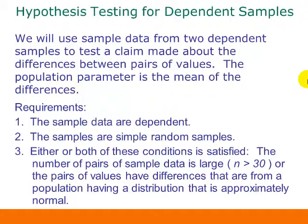For hypothesis testing with dependent samples, we use sample data from two dependent samples to test a claim about the differences between pairs of values. The population parameter is the mean of the differences. The first requirement is that the sample data are dependent — the selection of one value from a pair depends on the selection of the other value from the pair.